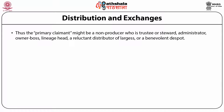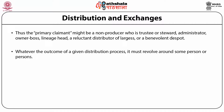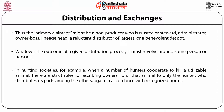The primary claimant might be a non-producer who is a trustee or steward, administrator, owner, boss, lineage head, a reluctant distributor of largess, or a benevolent despot. Whatever the outcome of a given distribution process, it must revolve around some person or persons. In hunting societies, for example, when a number of hunters cooperate to kill a utilizable animal, there are strict rules for ascribing ownership of that animal to only the hunter who distributes its parts among the others, again in accordance with the recognized norms.